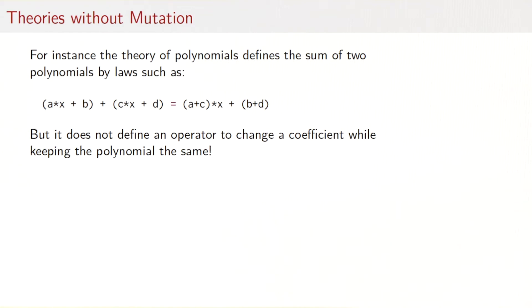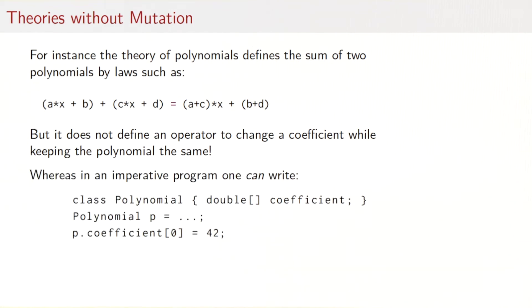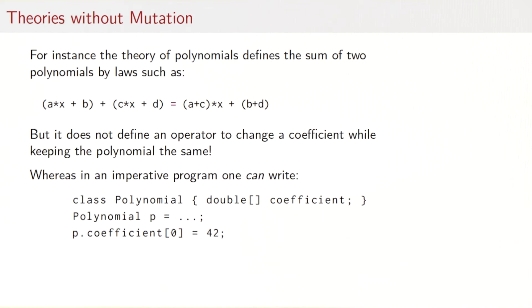For instance, the theory of polynomials describes the sum of two polynomials by laws such as this one here. To sum two polynomials of degree one, we take the two coefficients of the same degree and we sum those coefficients. There would be laws for all the other useful operators for polynomials. But one thing the theory does not do is define a polynomial operator to change a coefficient while keeping the polynomial the same. Whereas in imperative programming, one can do precisely that. One can write a class Polynomial that would have an array of doubles containing the coefficients. One can then define a concrete polynomial p and set the coefficient zero of that polynomial to 42. When one does that, the polynomial p is still the same. In mathematics that simply is not available. It would detract from the theory and could damage this theory by breaking laws.